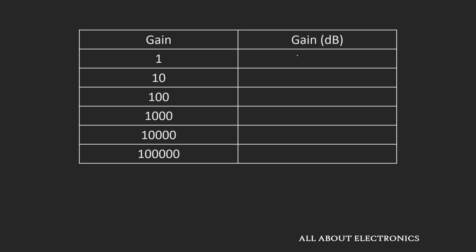When the gain is 0, it represents 0 dB; when gain is 10, it represents 10 dB. As you can see, every time the gain is multiplied by a factor of 10, there is an increase in gain by 10 dB.